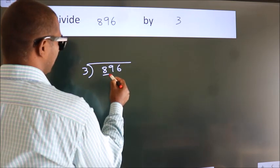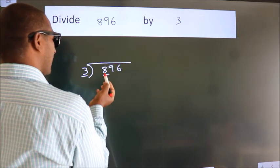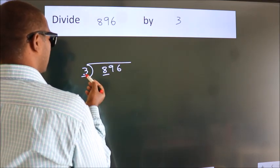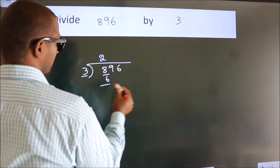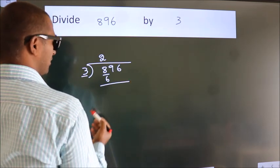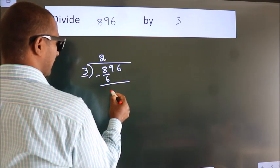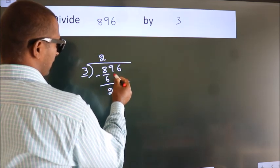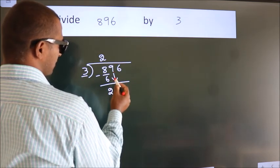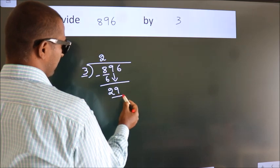Next, here we have 8, here 3. A number close to 8 in 3 table is 3 2's 6. Now we should subtract. We get 2. After this, bring down the beside number. 9 down. So, 29.